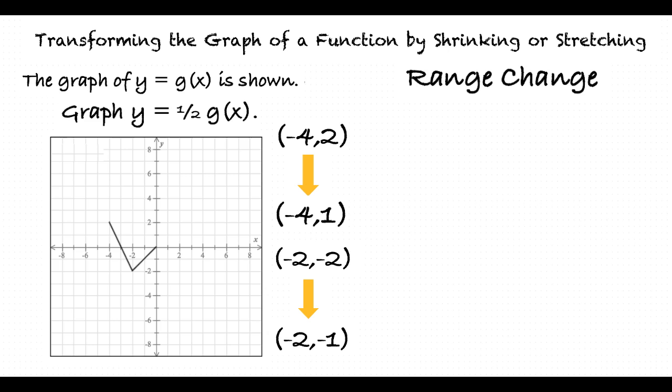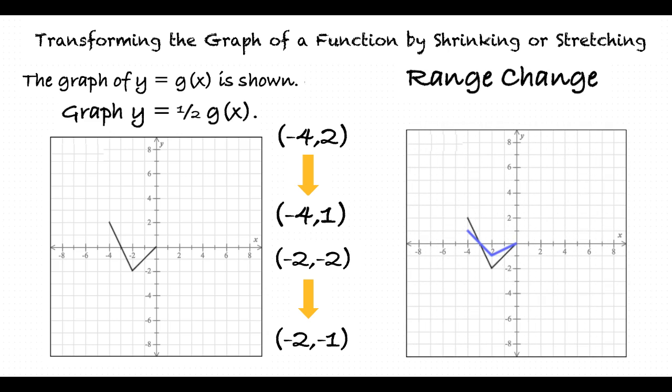Multiplying the y-coordinates of each endpoint by 1 half yields our new graph, with endpoints at negative 4, 1, negative 2, negative 1, and 0, 0.